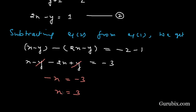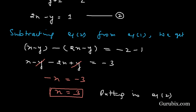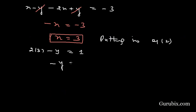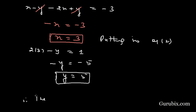This means x equals 3. Now we substitute this value into equation number 2 to get the value of y: 2 into 3 minus y equals 1, which means minus y equals minus 5, so y equals 5. Therefore, the required fraction is 3 over 5. This is the solution of the question. Thank you.